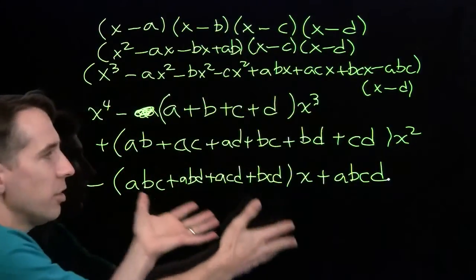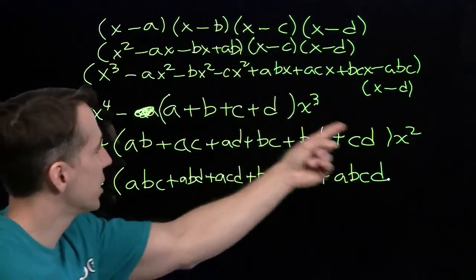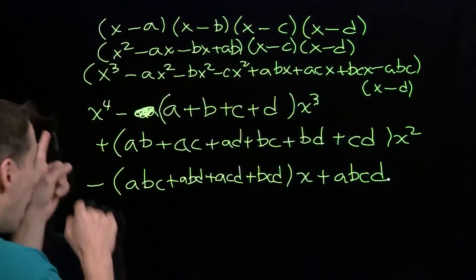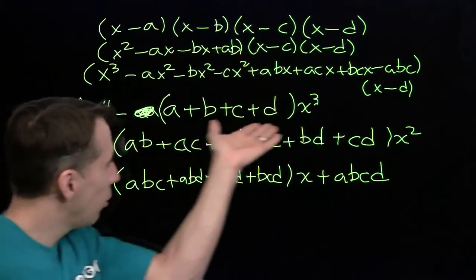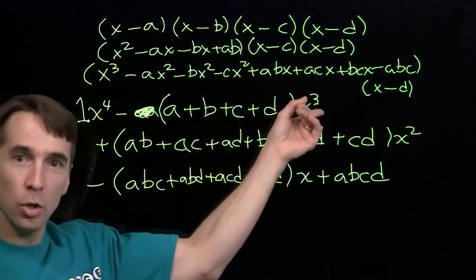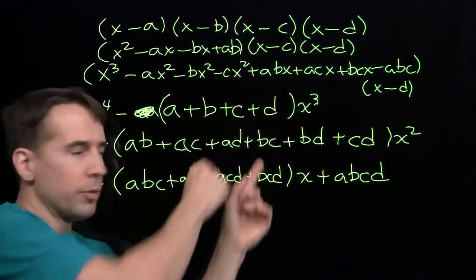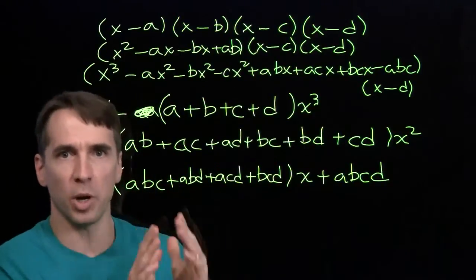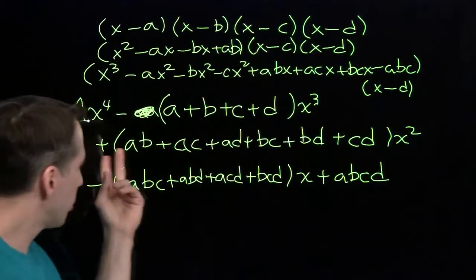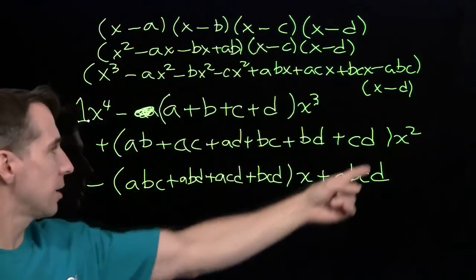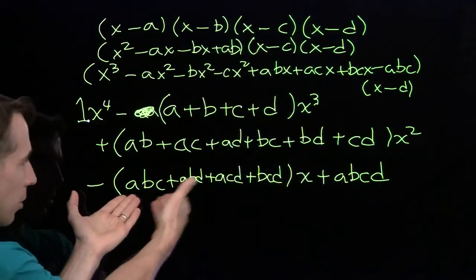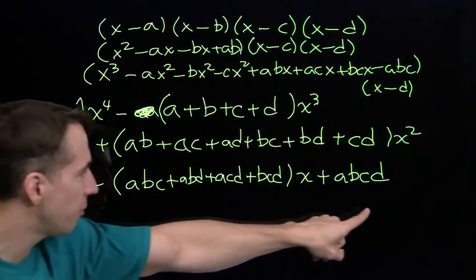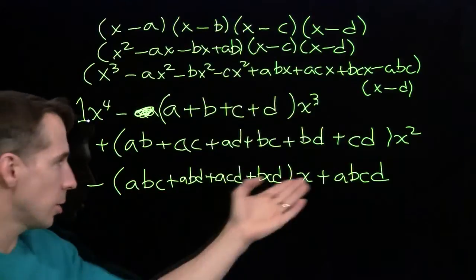Now we see how the coefficients of this monic quartic relate to the roots. The coefficient of x cubed is the opposite of the sum of the roots. The coefficient of x squared is the sum of all pairwise products of roots. The coefficient of x is the opposite of the sum of all products taken three at a time. The constant term is just the product of all four roots.